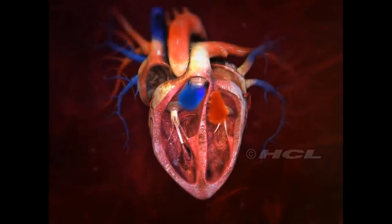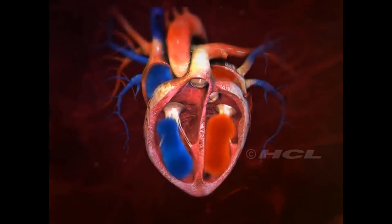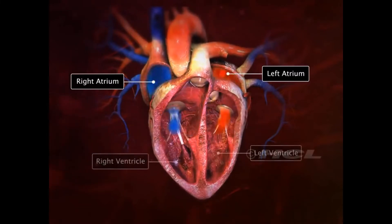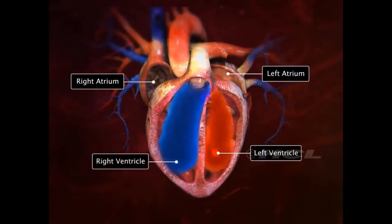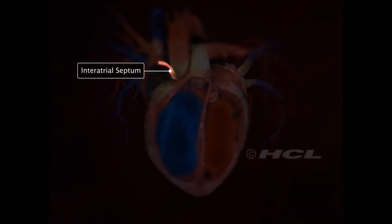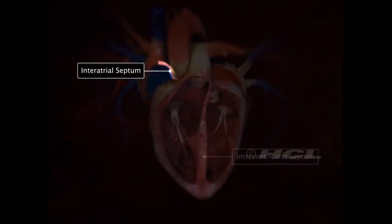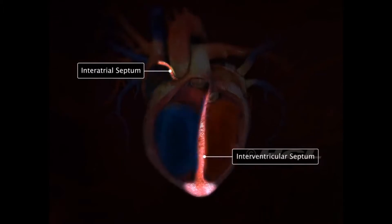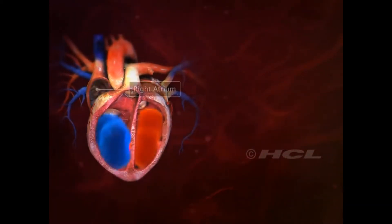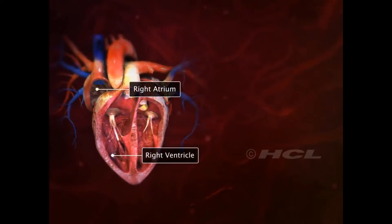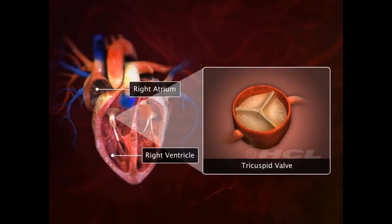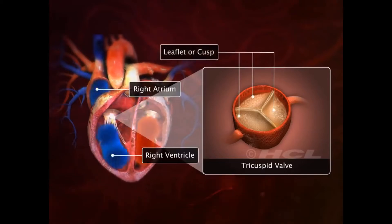The human heart has four chambers. The two upper chambers are the atria and the two lower chambers are the ventricles. The interatrial septum separates the two atria and the interventricular septum is the partition between the two ventricles. The right atrium and right ventricle are connected through a tricuspid valve. As the name suggests, it has three leaflets or cusps.